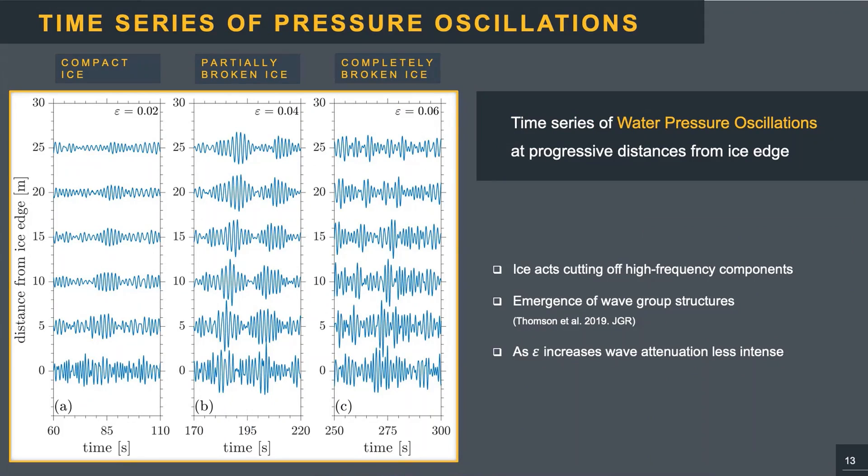For what concerns waves behavior, this figure displays a portion of the time series of the water pressure oscillations, with the bottom series representing the incoming wave field. In general, attenuations gradually assume relevance as the waves propagate into the ice, with the ice acting as a low-pass filter by cutting off high frequency components. The filtering causes the emergence of wave group structures, in agreement with the recent field observations in the Arctic. All these effects become less significant as the wave steepness increases and the ice starts to break up.